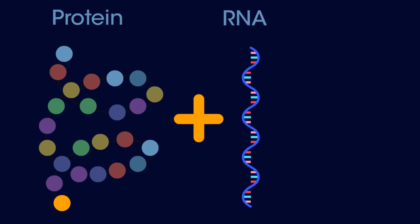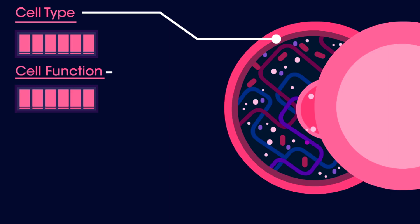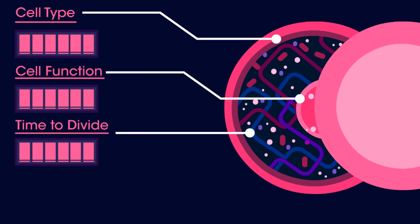Proteins and RNA together control the cell. They decide what type of cell it is, what it does, when it divides and when the cell will die.